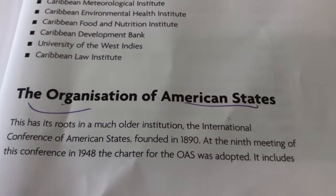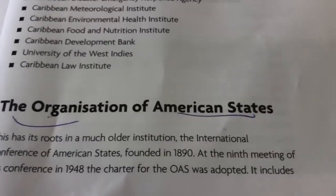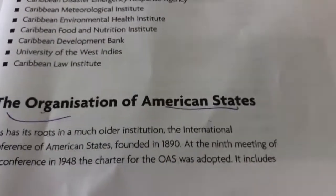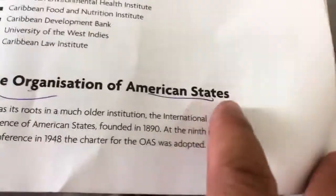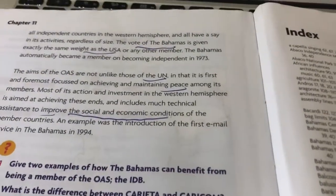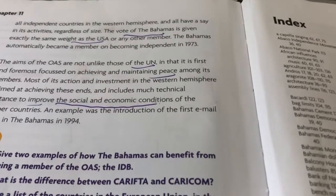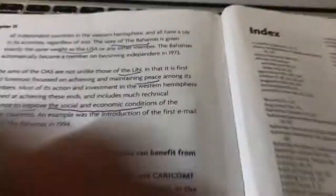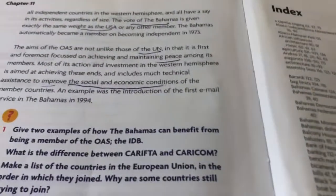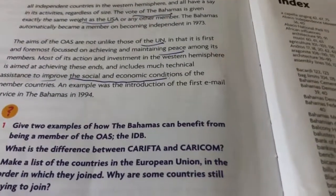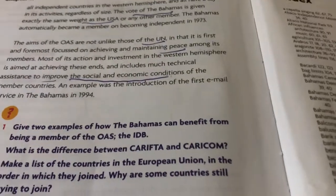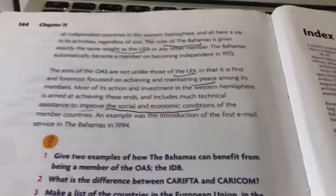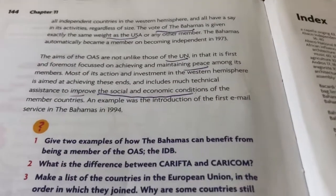One last organisation we're going to look at is the Organisation of American States, or OAS. This was founded in 1890, which was a lot longer ago. Countries get to have a vote about certain affairs, and the vote of the Bahamas is the same as the US or any other member. When the Bahamas became independent, it automatically joined. The aims are similar to the UN — to promote peace and improve social and economic conditions.